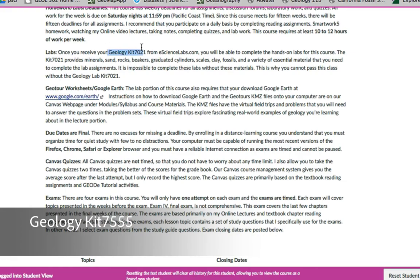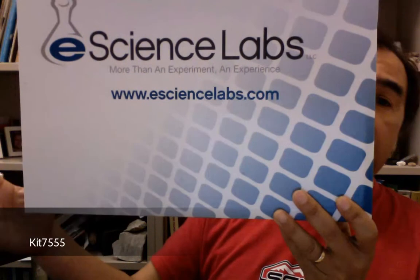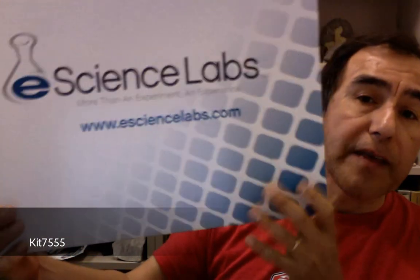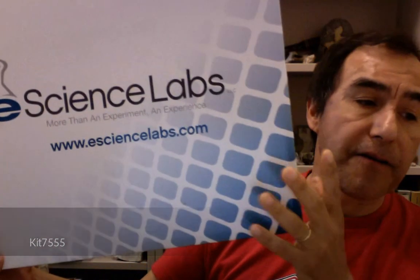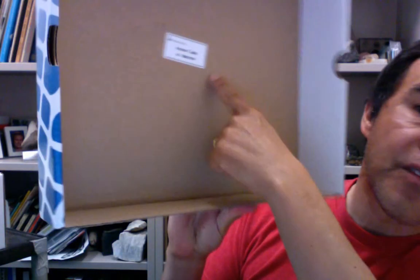The other thing about the labs - you'll need this Geology Lab Kit 7021 from eScienceLabs.com. It looks something like this. Your lab kit on the inside cover of the box here, it'll have an access code. I've already used this access code, but this will give you access to the eScience Lab manual, or the instructions to do the particular labs. In this lab, you'll see that there's a variety of materials.